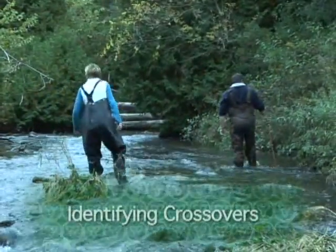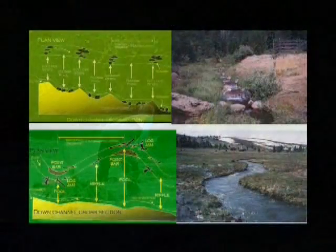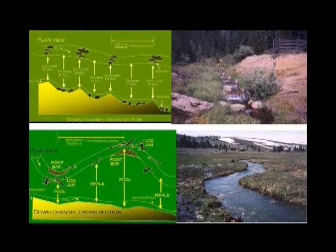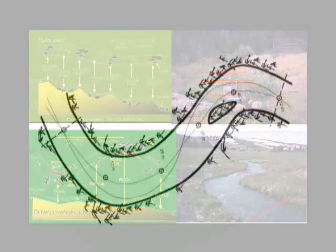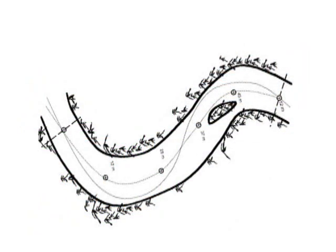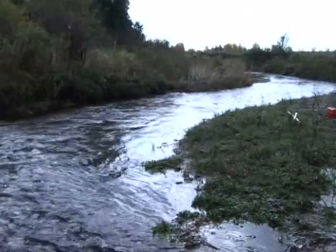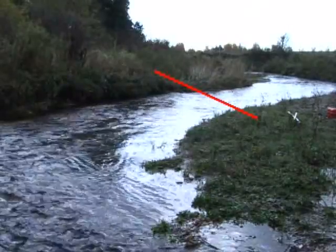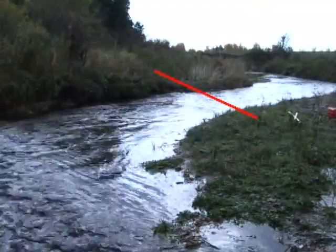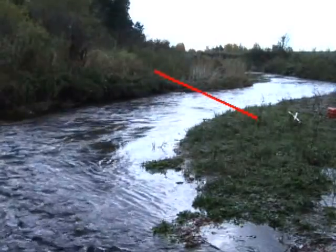A crossover is the location on the stream where the thalweg, or the deepest part of the channel, is in the middle of the stream. It is typically defined under high flow conditions. The velocity is actually at its lowest at the crossover point, and it puts equal force on both banks, which tend to be the same height on both sides of the river at the crossover point.